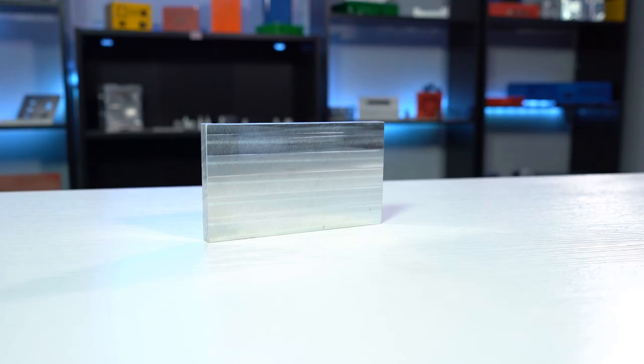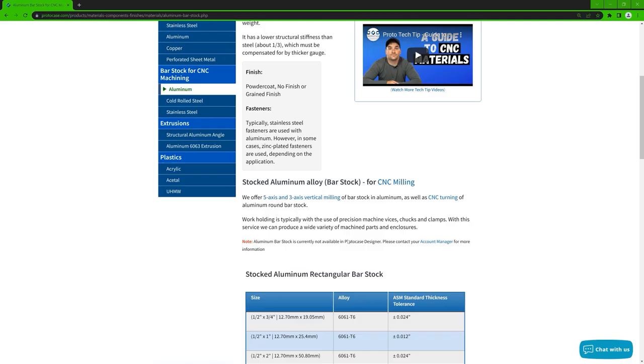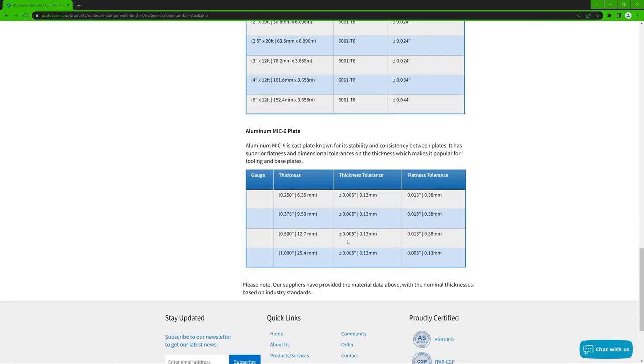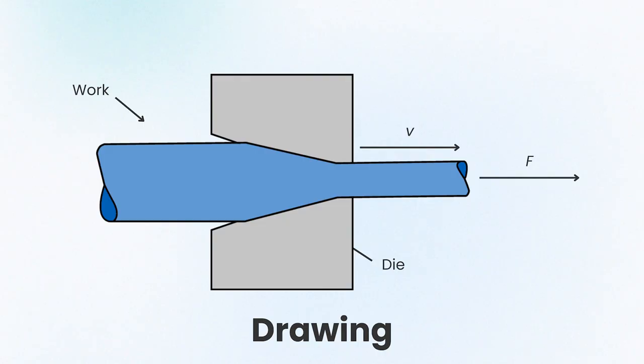So, how is Mic6 different than what we stock right now? Mic6 is an alloy of aluminum that is cast and stress relieved. The aluminum alloy types we previously stocked were 5052 and 6061. These alloys are drawn or rolled when they're manufactured rather than being cast.